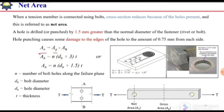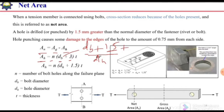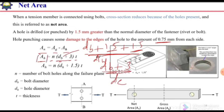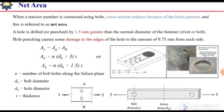To calculate net area: An = Ag minus Ah, where Ah is the area of the holes. The area of holes equals n times (db + 3) times thickness. Here, db + 3 represents the effective diameter: db is the bolt diameter, the hole is punched 1.5 mm larger than the bolt, and 1.5 mm is added for the damaged zone (0.75 mm on each side), giving db + 3 as the effective diameter.